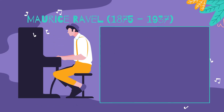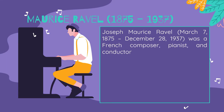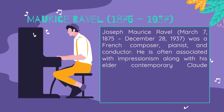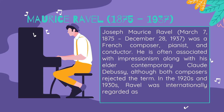Joseph Maurice Ravel was a French composer, pianist, and conductor. He is often associated with Impressionism along with his elder contemporary Claude Debussy, although both composers rejected the term.